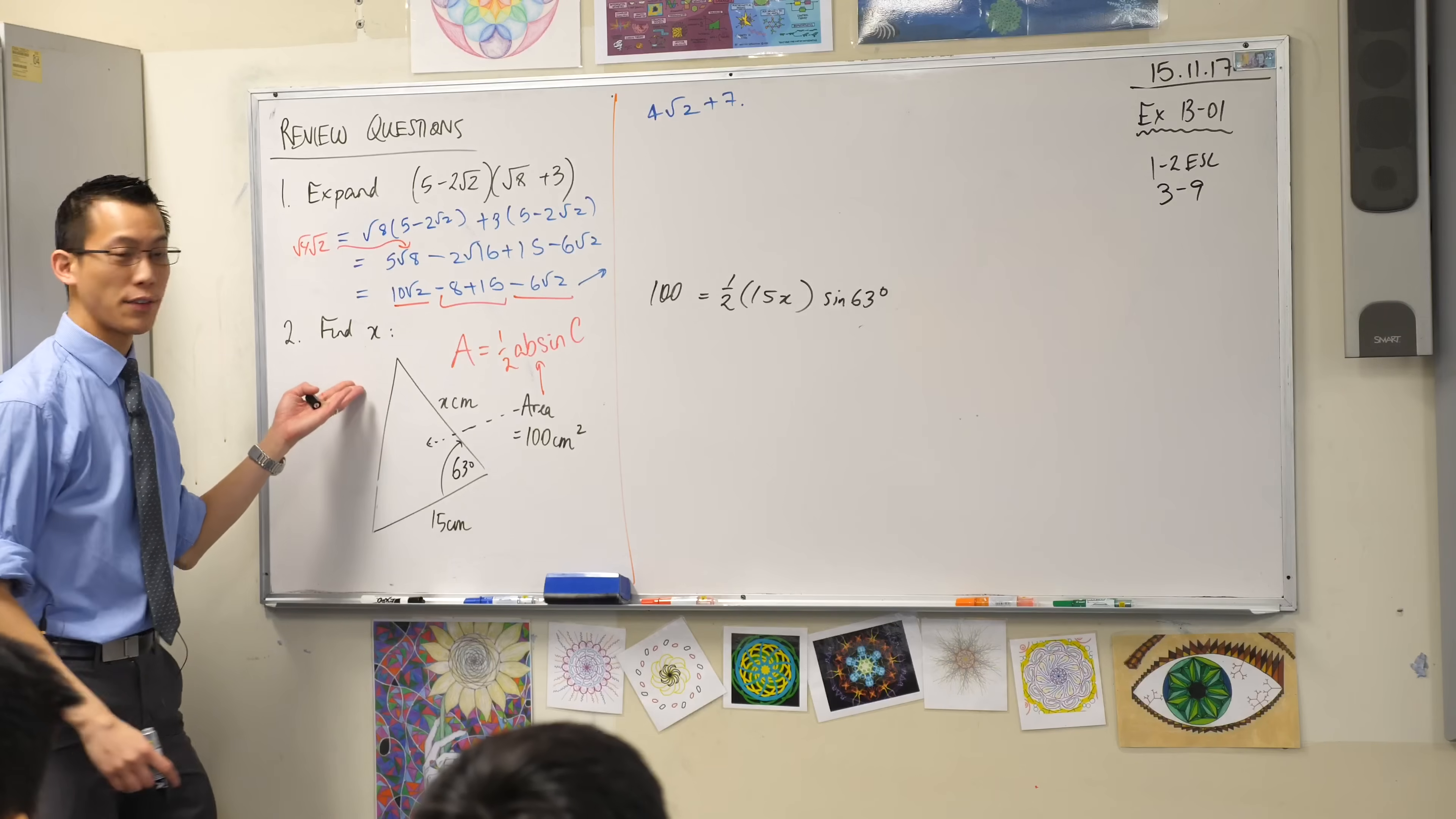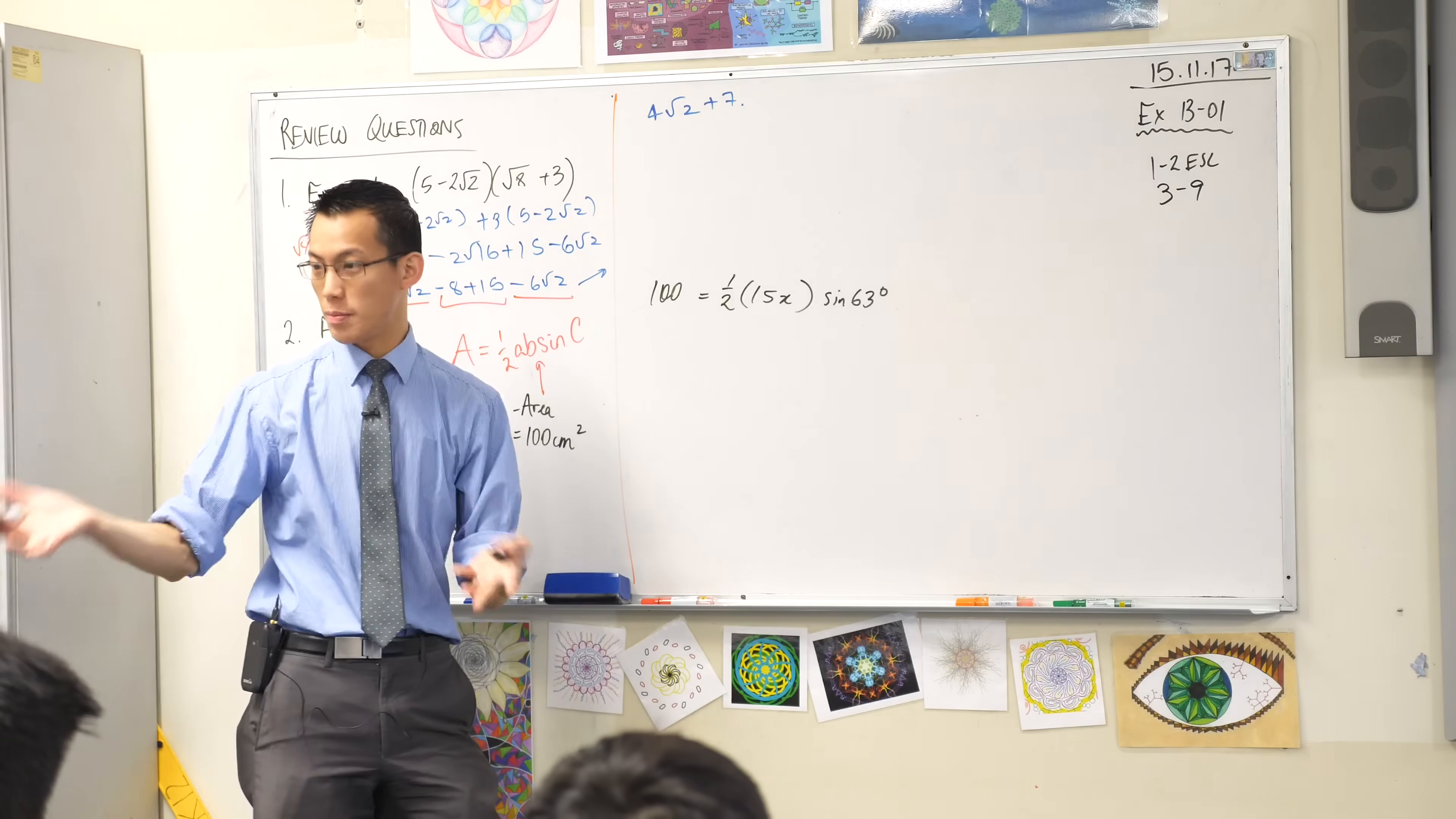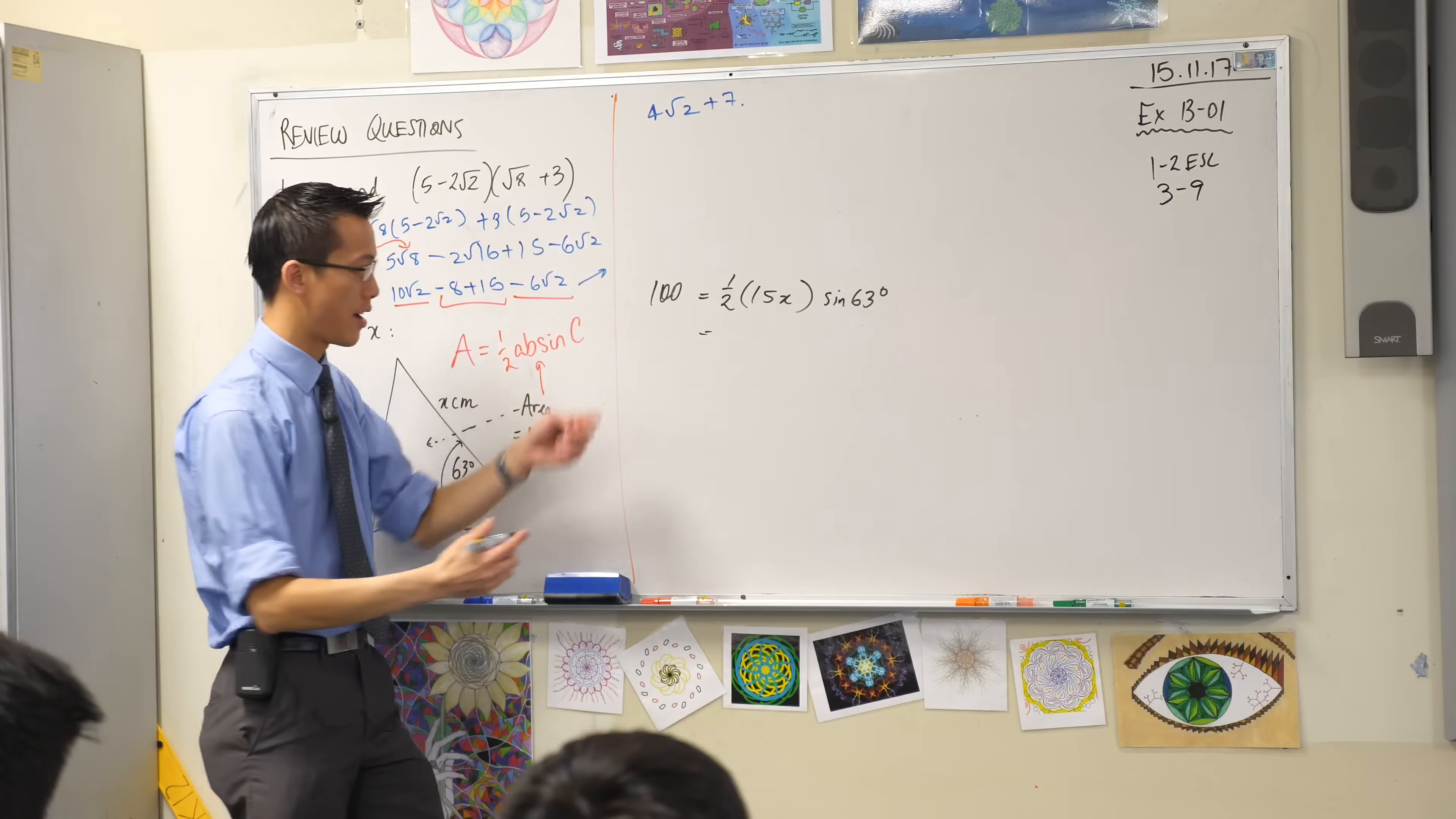Now I've been asked to find x, so I need to make that the subject. It's here tangled up with all this other stuff, so what should I do to get it on its own? I should be dividing, shouldn't I? This over here is 15 on 2 sine 63.